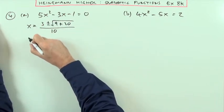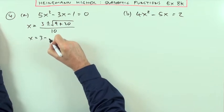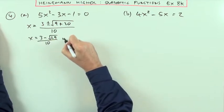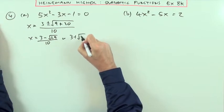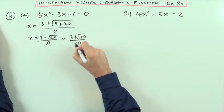Which gives me two answers. I've got either x equals 3 minus root 29 all over 10, or x equals 3 plus root 29 all over 10.